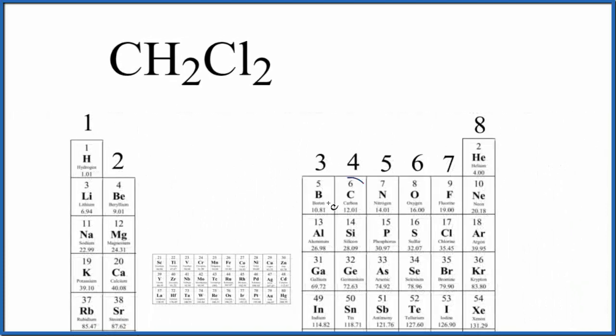The periodic table can be useful when you do that. So we find carbon right here, that's in group 14, sometimes called 4A, that has four valence electrons. Hydrogen, that's in group 1. All of these elements have one valence electron. We have two hydrogen atoms.